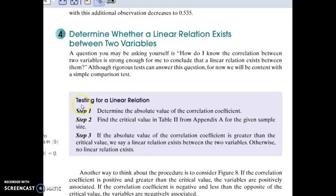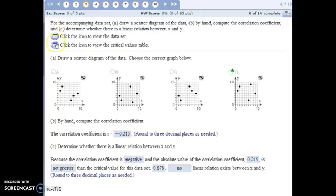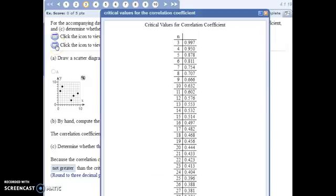And then what you do is find the critical value in the table, in table 2 of the appendix. It's page A2 in the textbook, or it's also linked here in StatCrunch. But there were five pieces of data in our sample, five points that we plotted in our scatter diagram. So our critical value is 0.878.